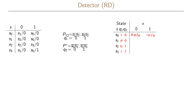In state s1 for input 0, we go to s2 encoded as 01 with output 0; for input 1, we go to s0 encoded as 10 with output 0. In state s2 for input 0, we stay in 01 with output 0; for input 1, we go to s3 encoded as 11 with output 0. In state s3 for input 0, we go to s1 encoded as 00 with output 0; for input 1, we go to 10 with output 1.